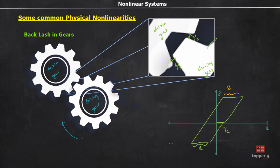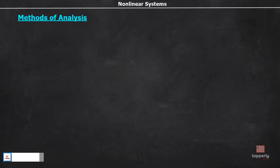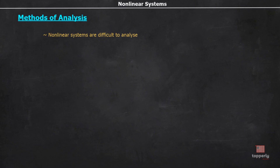We have discussed some of the most common types of physical nonlinearities. If we look into nature, we will find many more examples. Now, the next topic we have to discuss is the different methods of analysis of nonlinear systems. As we have discussed already, nonlinear systems are difficult to analyze and arriving at general conclusions is tedious. Several techniques are developed to suit different types of analysis, where each method has its own advantages and disadvantages. Therefore, it is necessary to analyze the same system using more than one technique to draw conclusions.